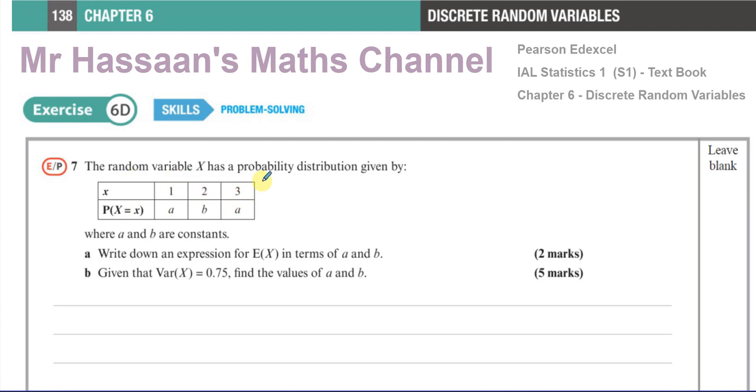The random variable X has a probability distribution given by this table. These numbers 1, 2, 3 represent the possible values of the random variable in this distribution, and a, b, and a are the probabilities of those occurring. Of course, we don't know the values of a and b. We've got to find them later on. So first part a says: